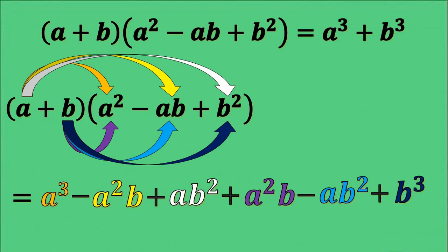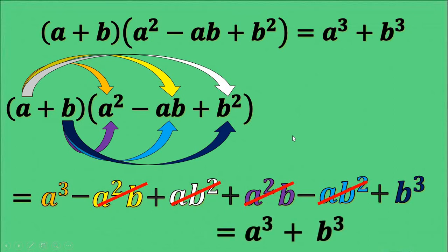As you can see in the result, there are terms that can be combined. Negative a squared b plus a squared b differ in sign, so we subtract them — the result is 0, and we can cancel them out. Similarly, ab squared and negative ab squared cancel out to 0 as well.